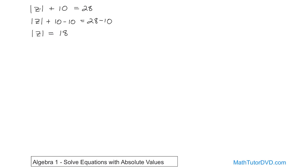Now a lot of students don't know what to do when you hit this point. This is not saying that z is equal to 18. If the absolute value bars were not here then yeah, you've finished the problem. But what it's saying is that the absolute value of z is 18.